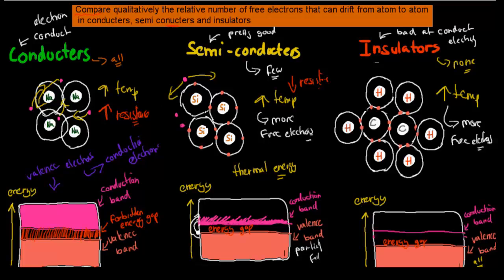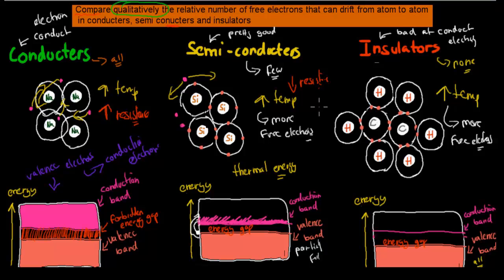This dot point was more or less the same as the last one but with different wording. It says: compare qualitatively — which means not with numbers, just qualitatively — the relative number of free electrons that can drift from atom to atom in conductors, semiconductors, and insulators. In conductors, basically all of them can move freely. In insulators, basically none at room temperature move freely. In semiconductors, we've got a few. That's what this dot point was all about — hope that was useful.